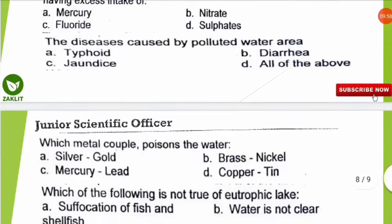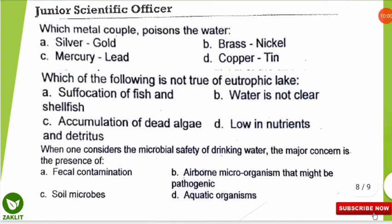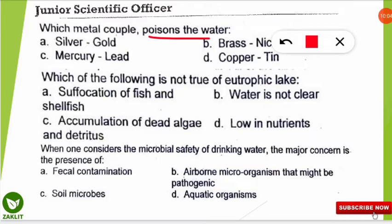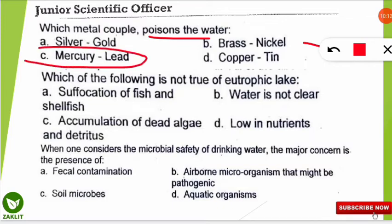The next question: which metal couple poisons the water? The correct option is C — mercury and lead are the metal couple that poison the water, making it very harmful. You should tell me in the comment section which disease is caused by mercury intake — I'll give you a hint: it is related to a Japan disease.